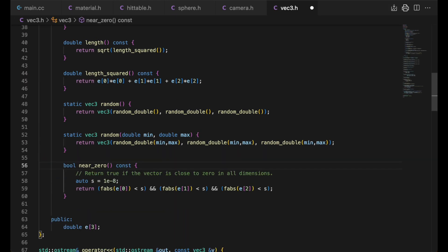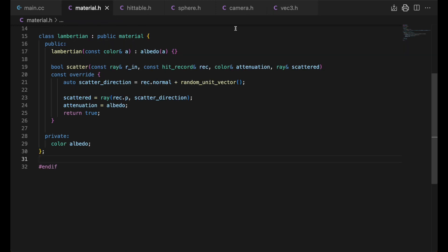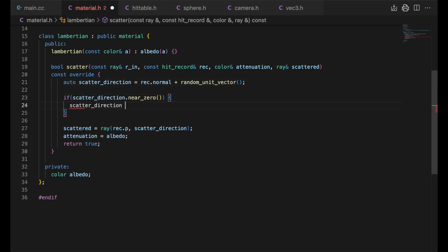Dr. Shirley then does something to deal with a potential bug. He checks if the reflected vector is close to zero in all directions. If so, he sets the scattered ray's direction to the normal. And that takes care of Lambertian surfaces.